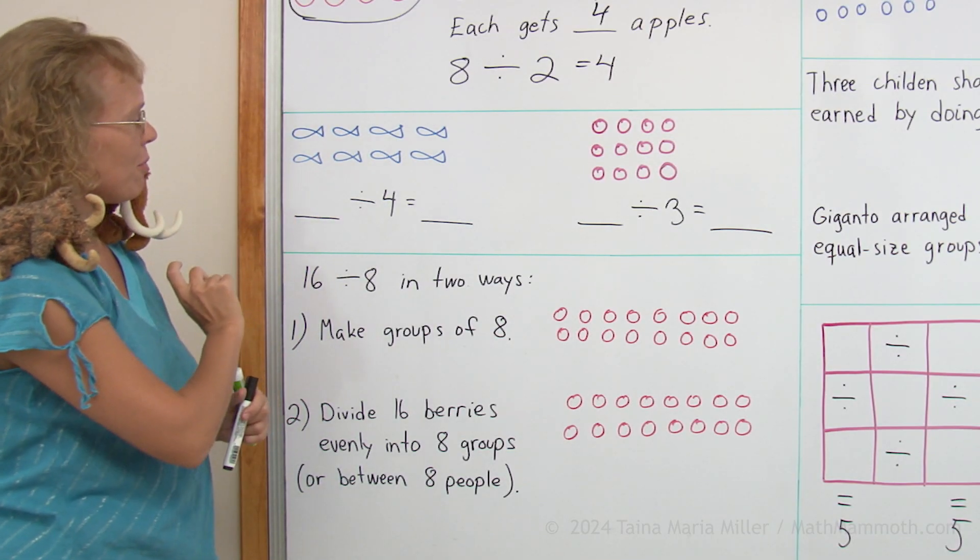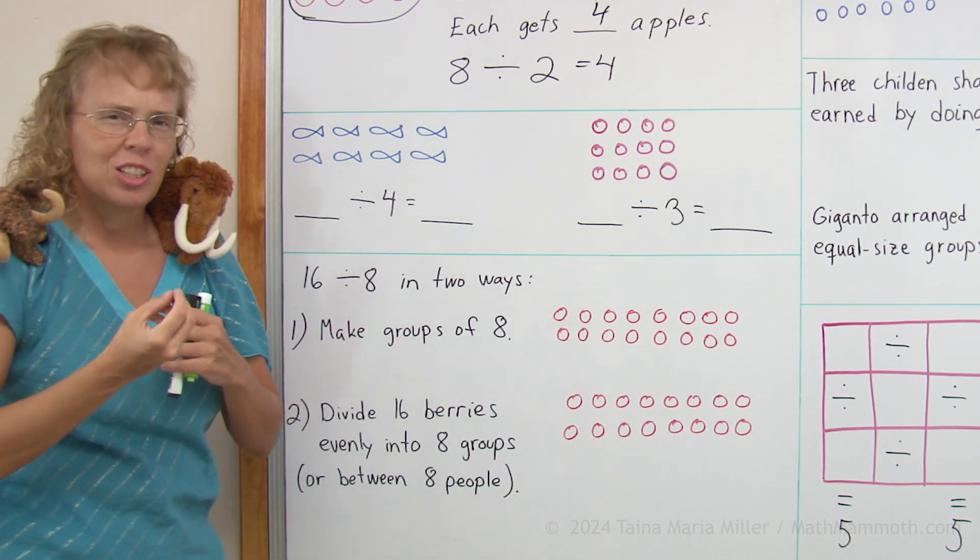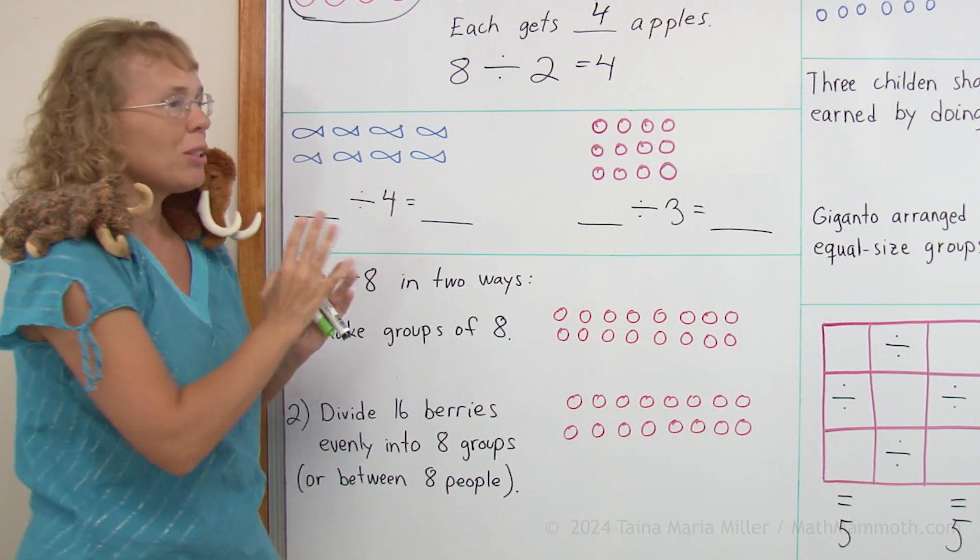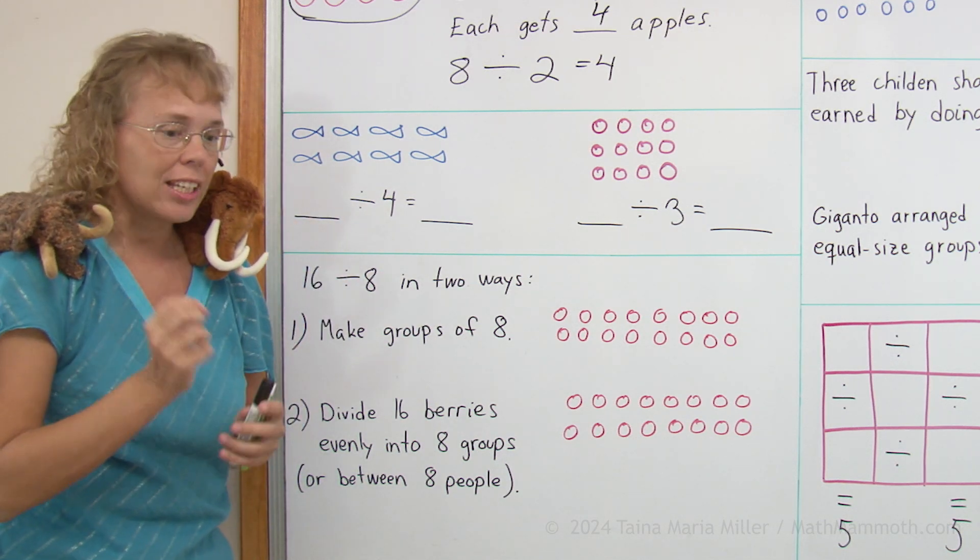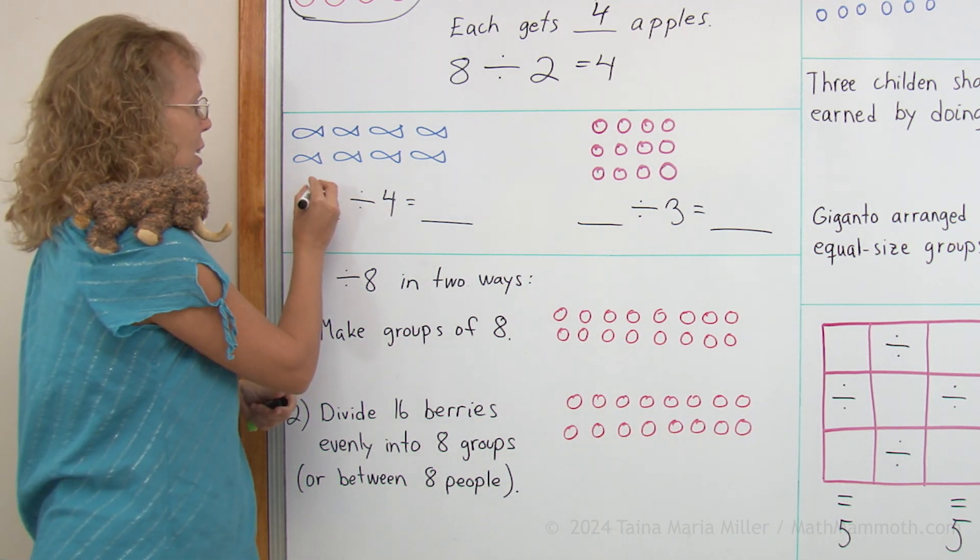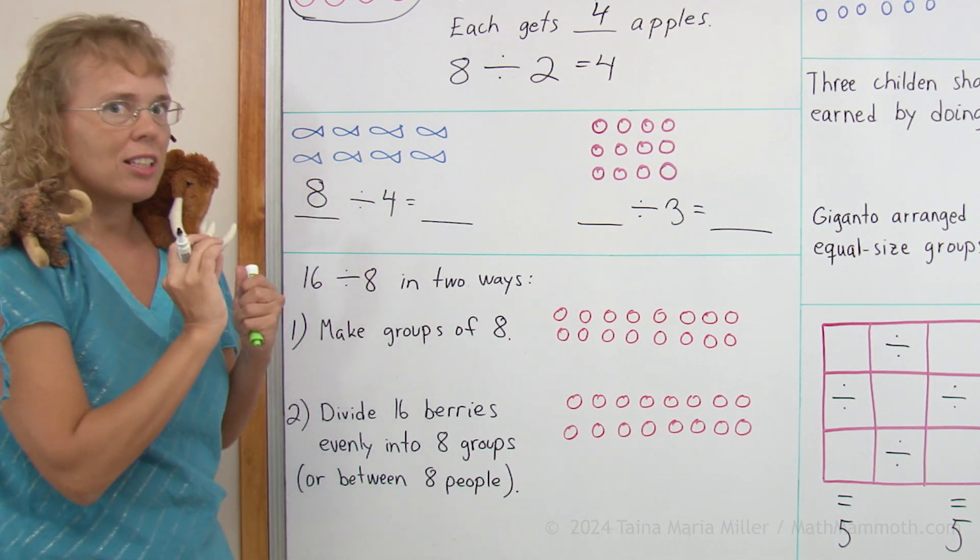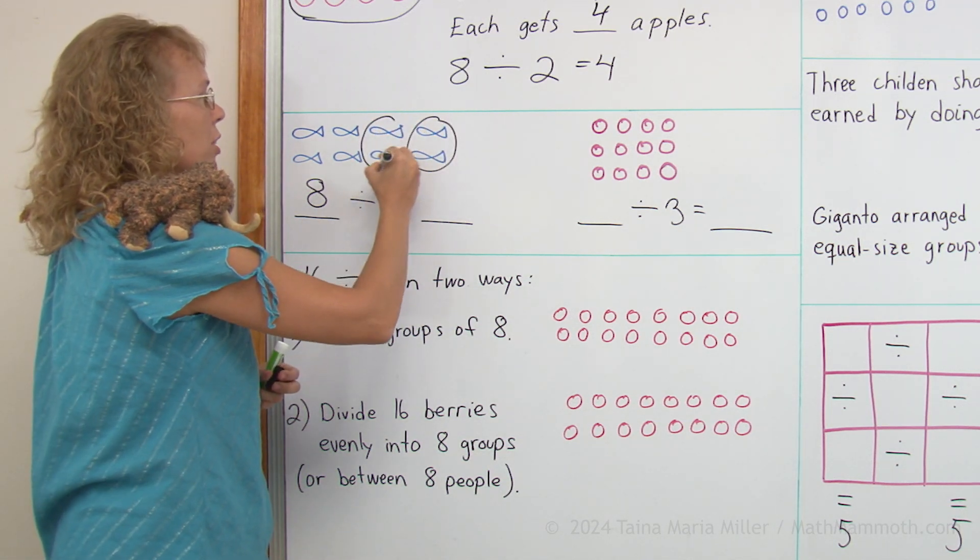Over here we have some fish, and divide by 4. Think of it as that we're going to divide these 8 fish between 4 people. How many will each get? We have 8 fish, we're going to divide them evenly or share them evenly between 4 people. And so each will get 2 fish.